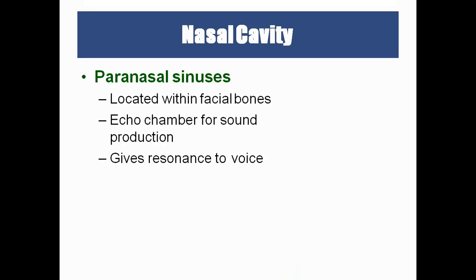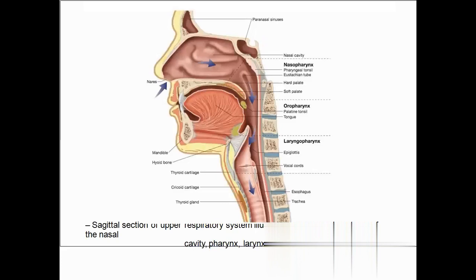Paranasal sinuses are open spaces inside the bones beside the nose — the frontal, ethmoid, sphenoid, and maxillary sinuses. These hollow spaces provide echo and resonance to the voice, similar to how an auditorium's construction affects sound.